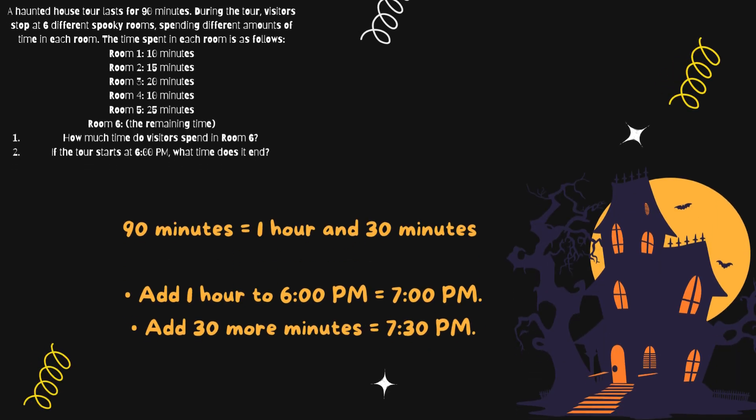Next, we'll find the end time. The tour starts at 6pm and lasts 19 minutes, or 1 hour and 30 minutes. Add 1 hour to 6pm, which is 7pm, and add 30 more minutes to 7pm, which is 7:30pm. So you spend 10 minutes in room 6 and the tour ends at 7:30pm.